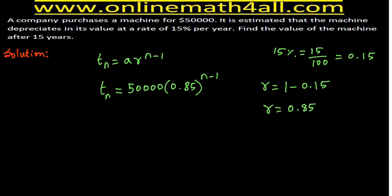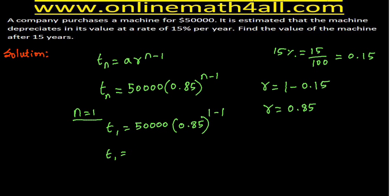For example, if you plug n = 7, it will give the value of the machine at the beginning of the seventh year. Let me show you: if I plug n = 1, then T1 = 50,000 × 0.85 to the power (1 − 1) = 50,000 × 0.85 to the power 0 = 50,000 × 1 = 50,000. So plugging n = 1 gives the value of the machine at the beginning of the first year, which is clearly $50,000 as given in the question.